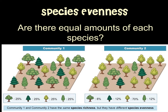Compare that to species evenness — are there equal amounts of each of the species? Looking at the picture, you can see community one and community two actually have the same species richness: four species of trees in each community. However, community one is quite even, with an equal distribution of each type of tree, while community two is not even — you see the dominance of one species over the others.